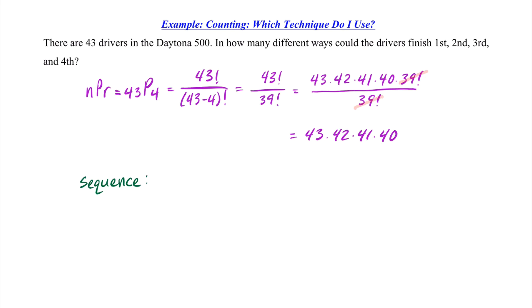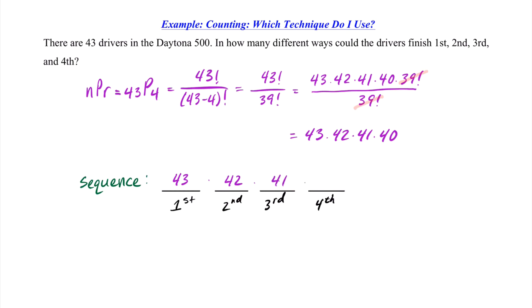If our thought process jumped to a sequence of finishers, we can think: we've got first place, second place, third place, and fourth place. How many drivers can win the race? 43 of them can win, but once that driver wins, there are only 42 drivers left to finish second. Therefore, 42 drivers can finish second, 41 can finish third, and 40 can finish fourth. We end up with the same result: 43 × 42 × 41 × 40 = 2,961,840 different ways drivers can finish first, second, third, and fourth.